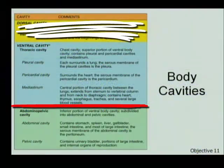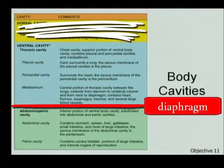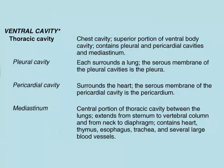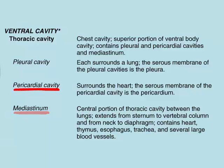The first cut we can make is to divide the ventral cavity into thoracic and abdominal pelvic cavities, which are divided by a diaphragm. The thoracic cavity is further subdivided into a pleural cavity, which contains the lungs, and everything in the thoracic cavity that's not the lungs, which is called the mediastinum. Within the mediastinum is the heart, and the heart is surrounded by a pericardial cavity — the region that surrounds the heart.